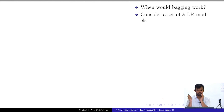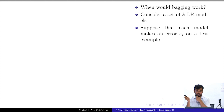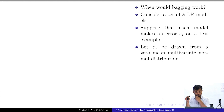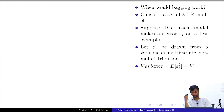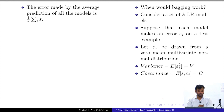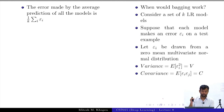Consider a set of K logistic regression models. Suppose each model makes an error epsilon_i on the test example. Let epsilon_i be drawn from a zero-mean multivariate normal distribution with variance V. We have K such distributions — one per classifier. We can compute the covariance between these random variables and let that covariance be C. The error made by the average prediction of all models is given by averaging epsilon_1 through epsilon_K, so model 1 made error epsilon_1, model 2 made error epsilon_2, and the average error is given by that expression.